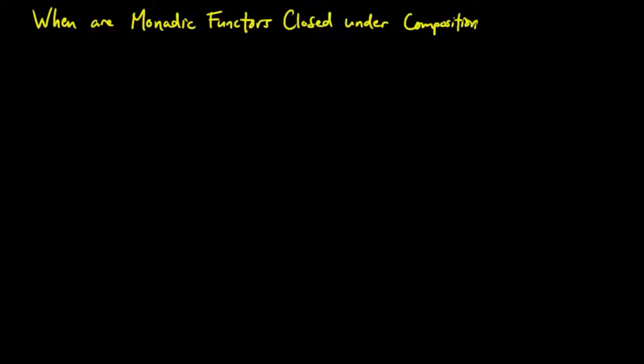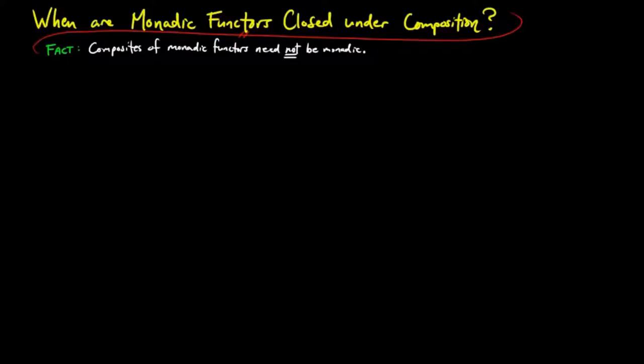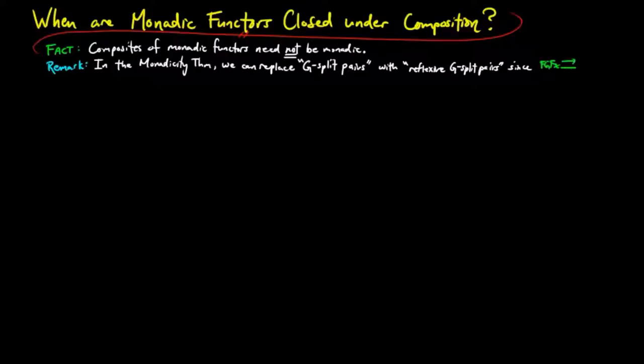When are monadic functors closed under composition? One downside of monadic functors is that composition of monadic functors need not be monadic. Also we note that in the monadicity theorem, we can replace g-split pairs with reflexive g-split pairs since f theta and epsilon fx is a reflexive pair for each Eilenburg-Moore object x theta.